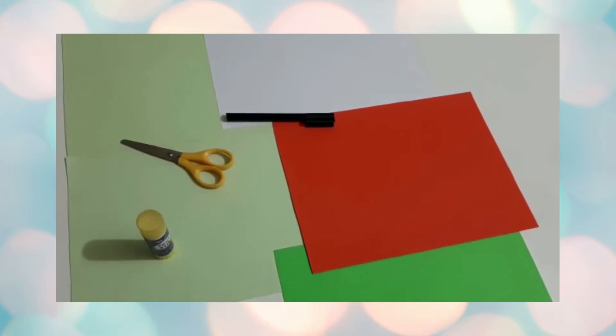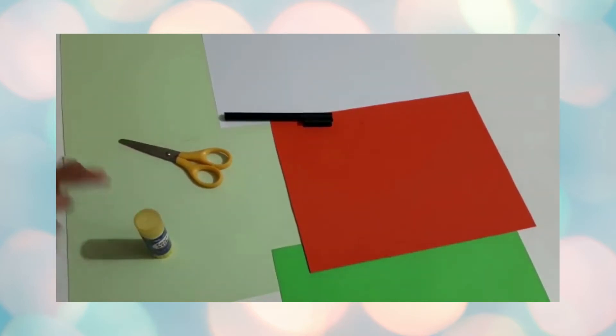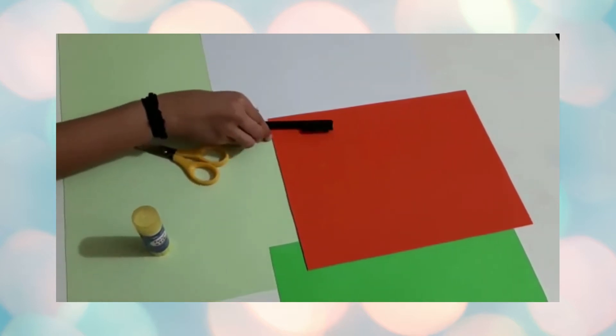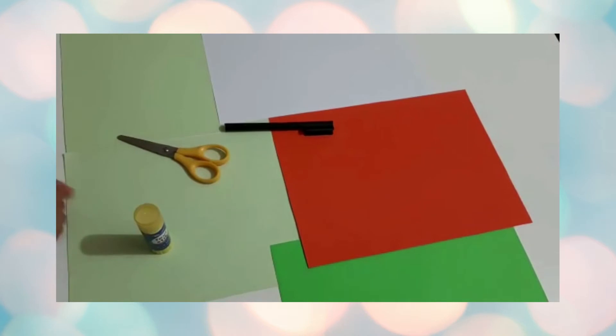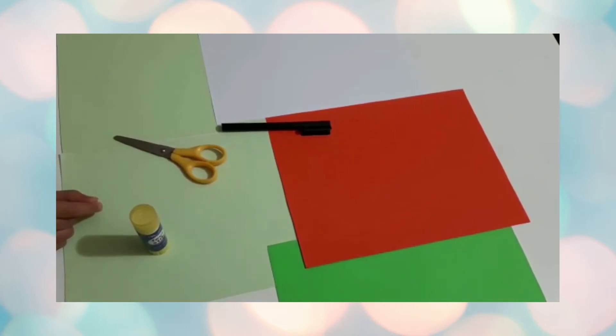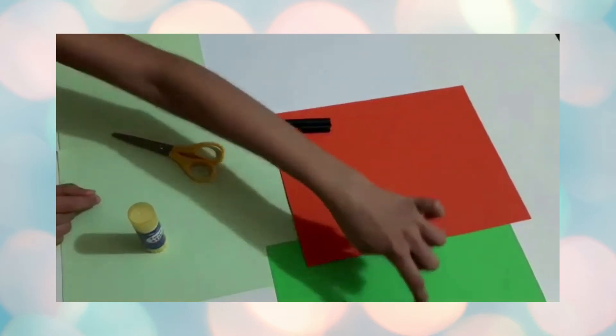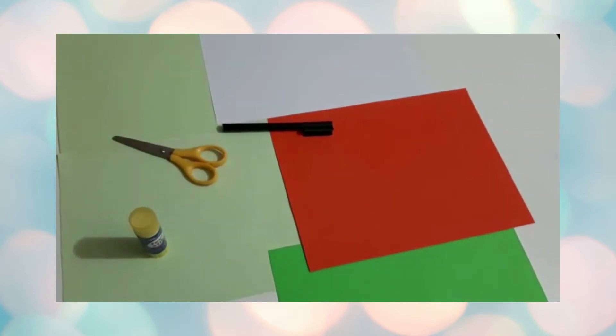The materials required for making this craft are a glue stick, scissors, and a black sketch pen. You can also use a pencil. And I took five sheets of paper here: one white, one orange or saffron colored, one dark green, and two light green. So, let's start making.